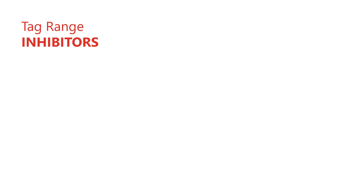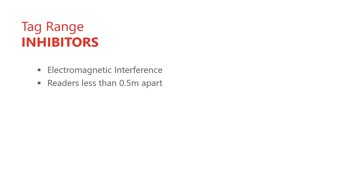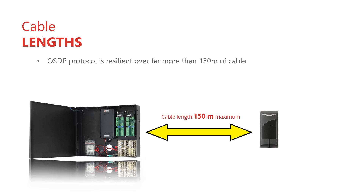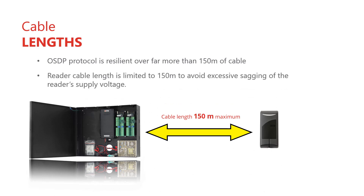Before we wire the reader cables, note that the reader-to-tag range can be impacted if there is strong electromagnetic interference, if readers are mounted closer than half a meter from each other, or if readers are mounted back to back on opposite sides of the same wall. Cut a length of two pair shielded cable long enough to comfortably route from the OSDP reader module to the reader location — no longer than 150 meters, as the reader's supply voltage will sag over longer lines.